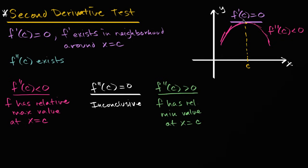I haven't done a deep mathematical proof here, but if I have a critical point where f prime of c is equal to zero, and we also see that the second derivative there is less than zero, well intuitively this makes sense that we are at a maximum value.